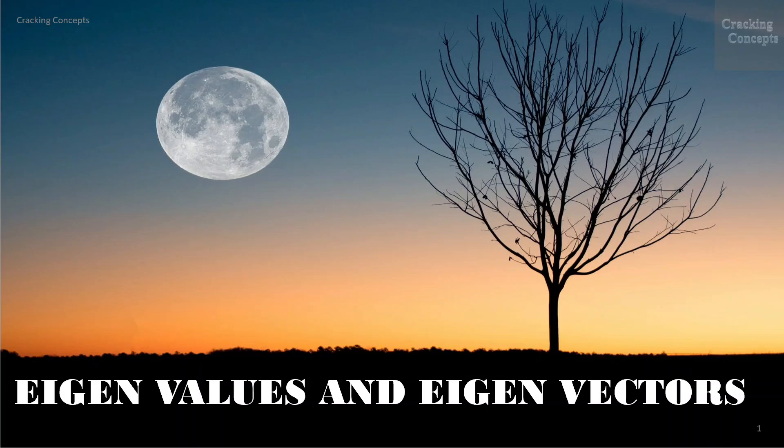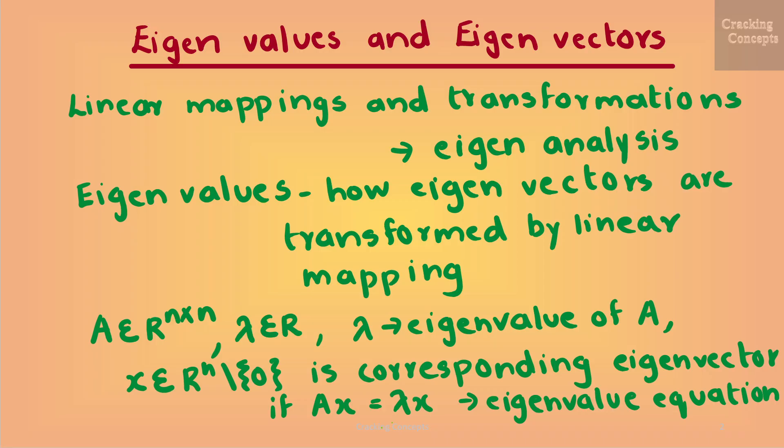Now we'll get to know a new way to characterize a matrix and its associated linear mapping. Recall that every linear mapping has a unique transformation matrix given an ordered basis. We can interpret the linear mapping and their associated transformation matrices by performing an eigenanalysis. The eigenvalues of a linear mapping will tell us how a special set of vectors, i.e. the eigenvectors, is transformed by the linear mapping.